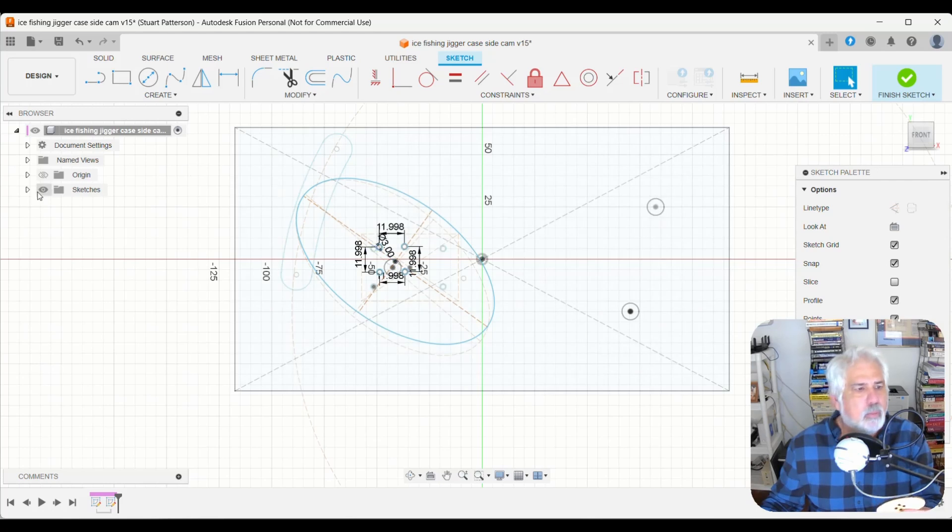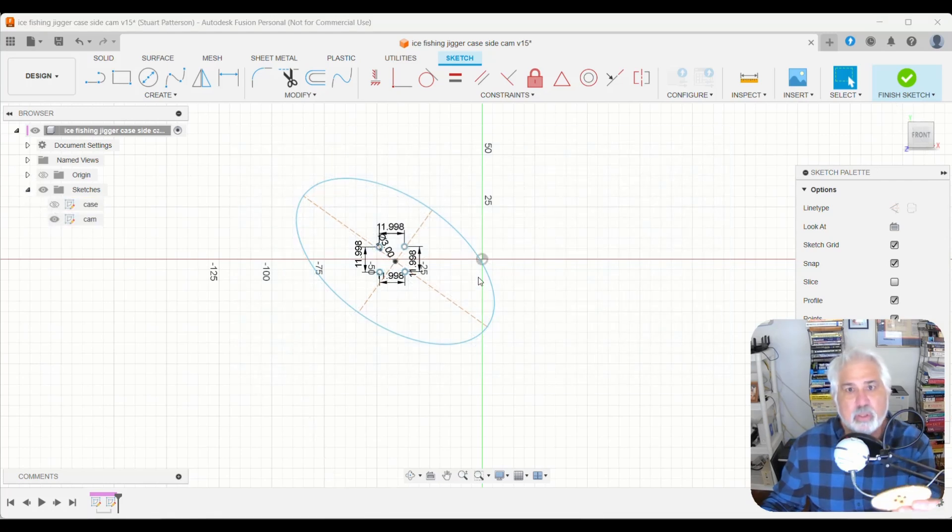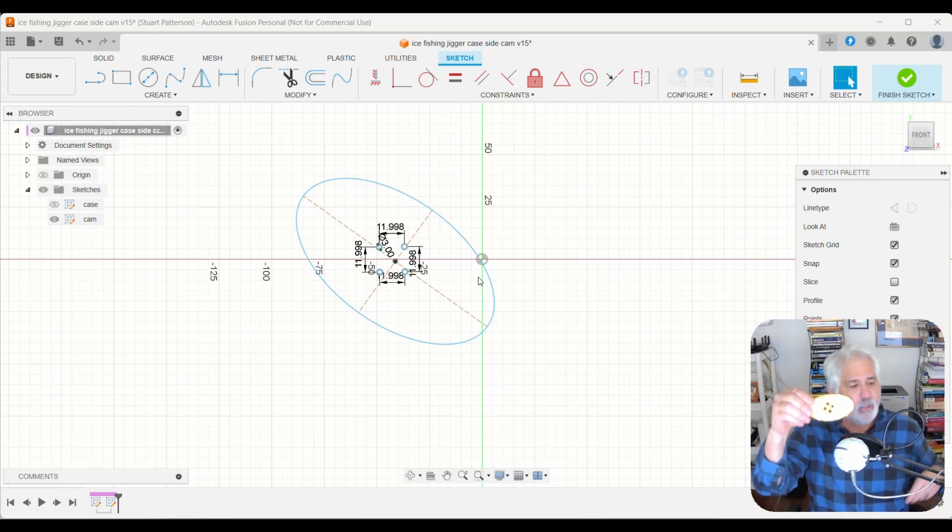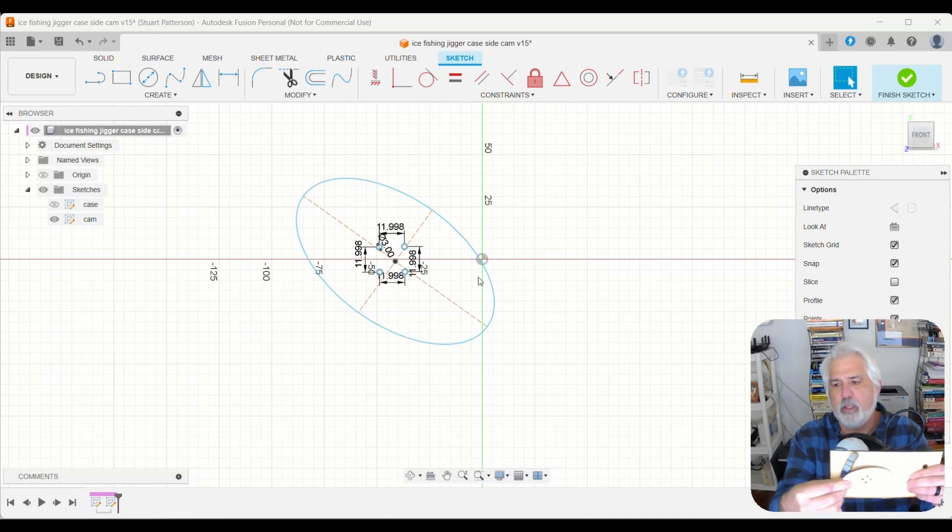The second drawing here is just the ellipse that's the cam. Let me turn that one off, the case. So this is just the cam that's basically going to fit where the motor goes.